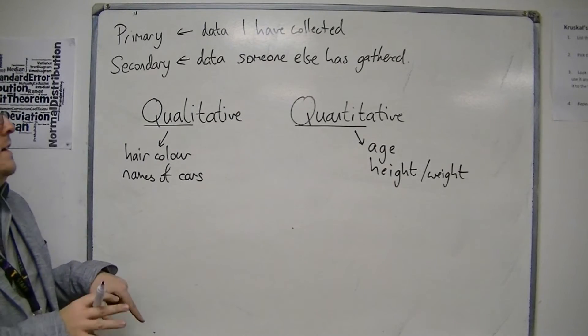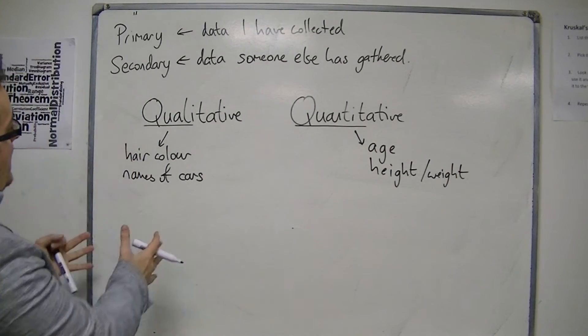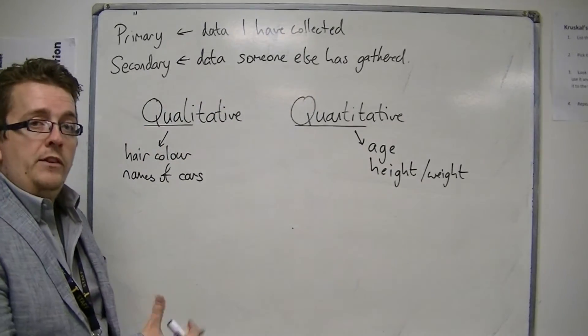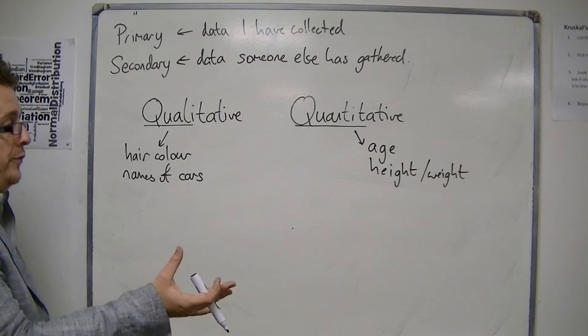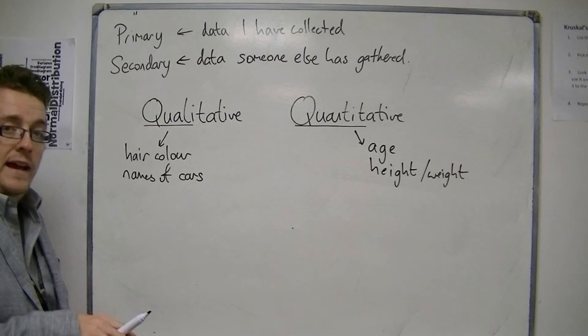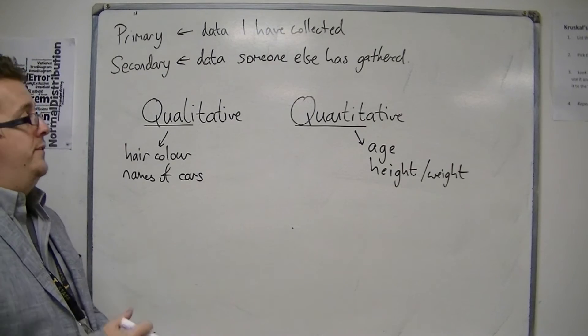So a questionnaire might not be asking what is your hair color. It might also ask your age. The age question is a number, is a numerical value that can be used and quantified, but the hair color cannot be. It is a qualitative question.